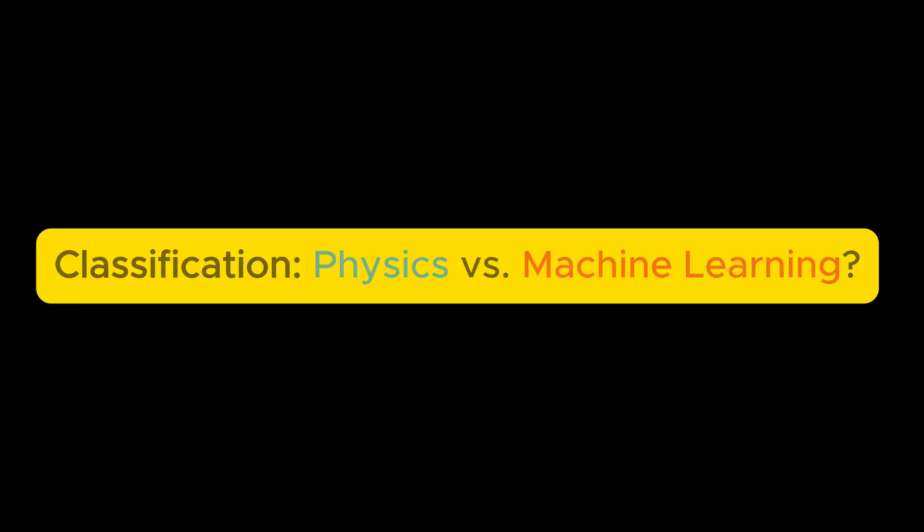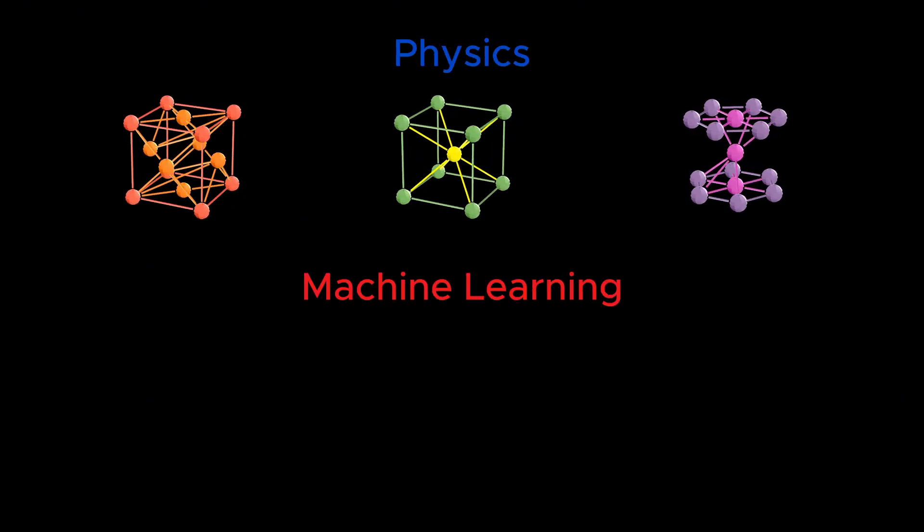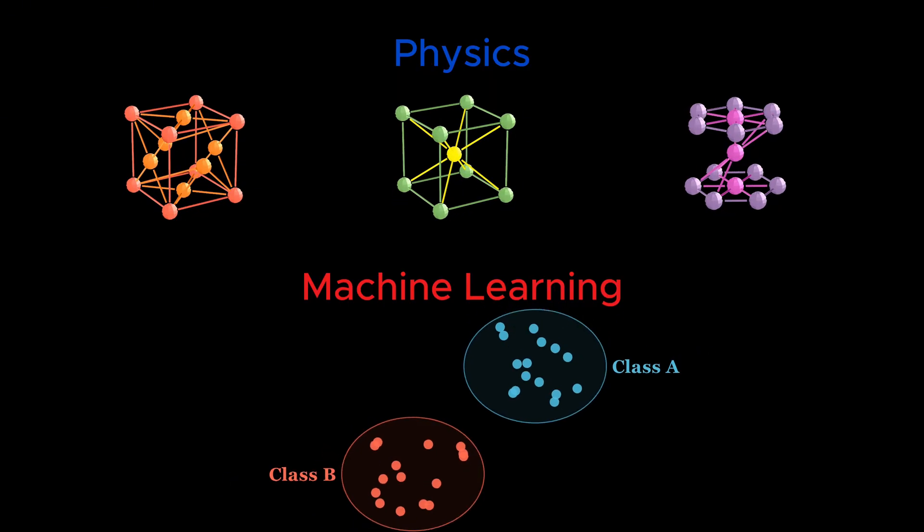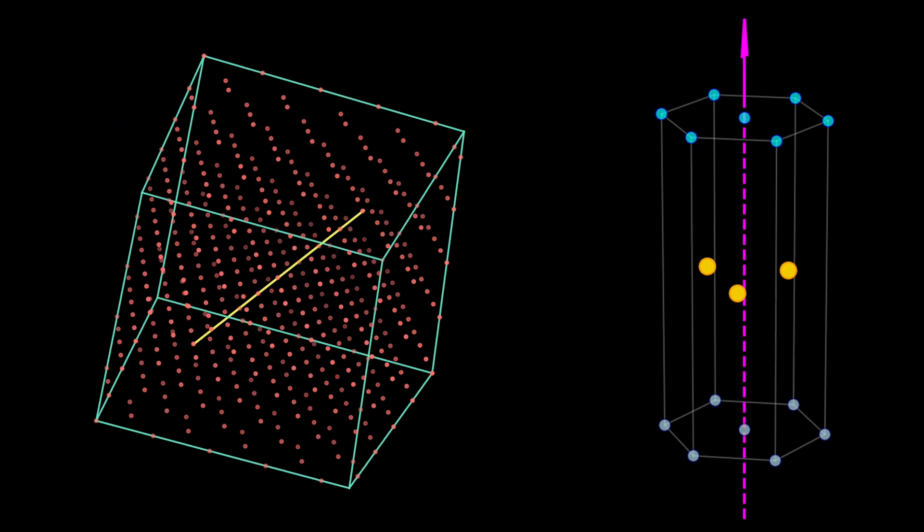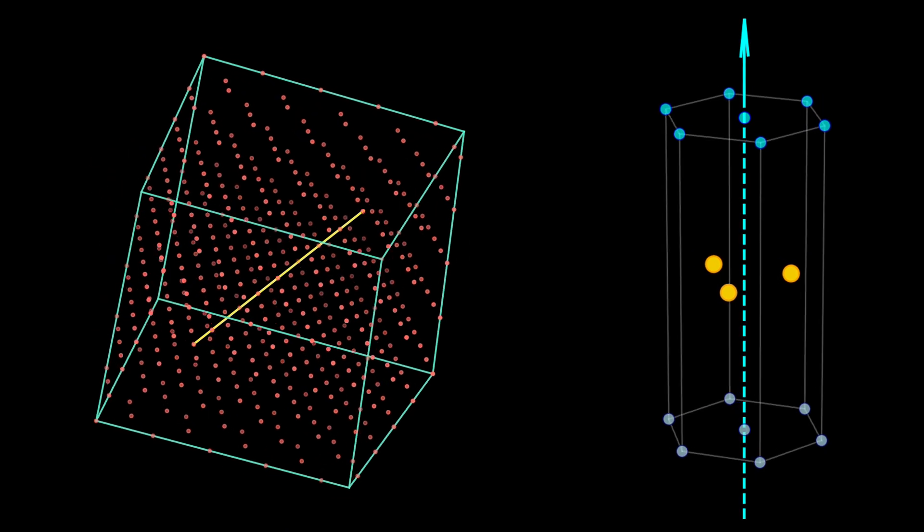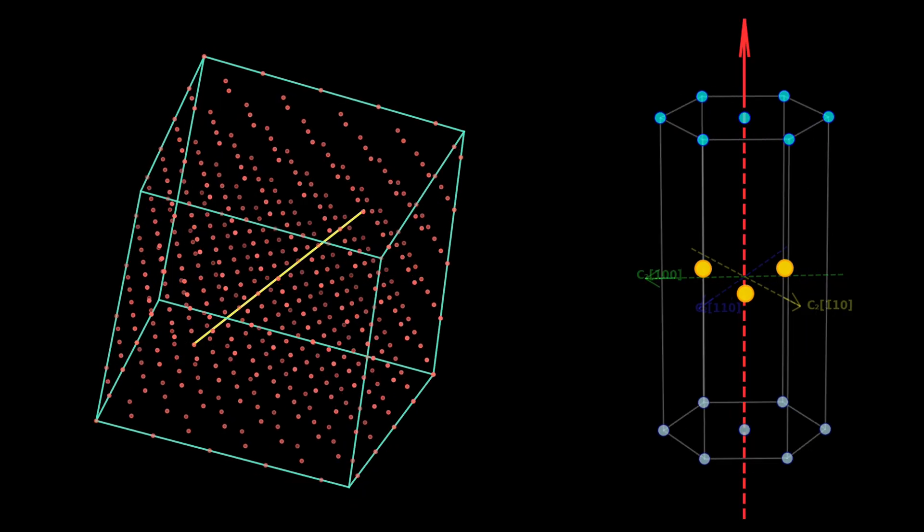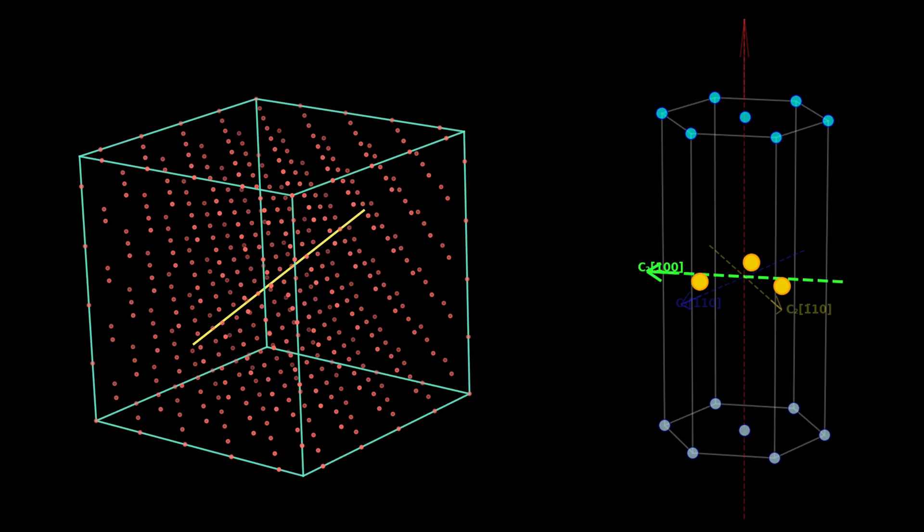Here is the answer in one sentence: Physicists use symmetry to classify, while machine learning uses similarity. If you're curious to see how classification is actually done in both machine learning and physics, and what we can learn by comparing these two worlds, stay with me. In the next few minutes, I'll take you through an eye-opening journey.